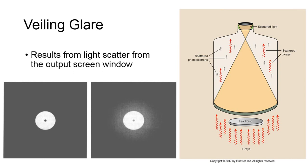Veiling glare occurs when there is light scattered at the output screen window of the I.I. This degrades the signal, which also degrades the image contrast. The appearance produced is more of a hazy type of image, as opposed to high contrast black and white visualization of the anatomy.